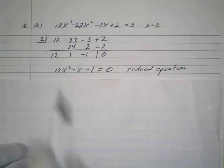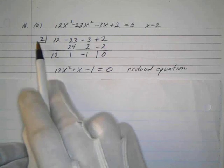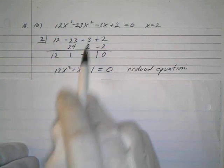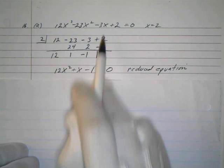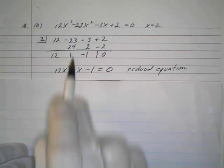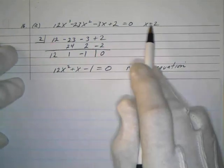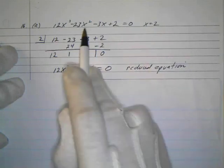So we divide. We bring down our 12. 2 times 12 is 24, add 1. 2 times 1 is 2, negative 1 - that checks out. This is my reduced equation: 12x² + x - 1 = 0. Once we know a root of the cubic, we can reduce it to a quadratic.